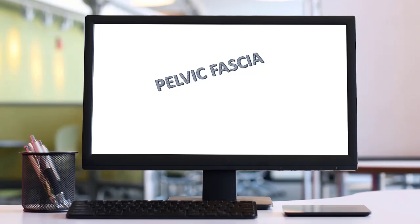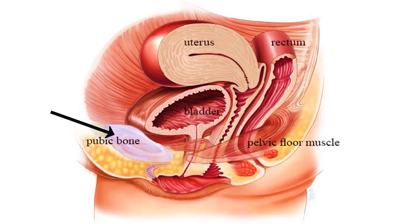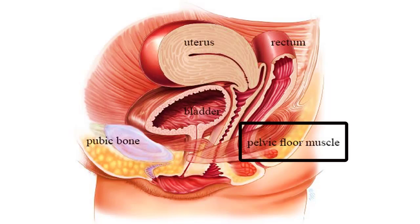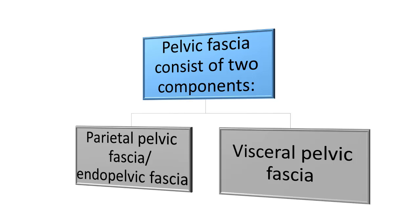Pelvic fascia is connective tissue located in the pelvic region, and its function is to support various pelvic organs including the bladder, uterus, rectum, and pelvic floor muscles. There are two components: parietal endopelvic fascia and visceral endopelvic fascia. The term endopelvic fascia includes both, though some books use this term only for the parietal component.